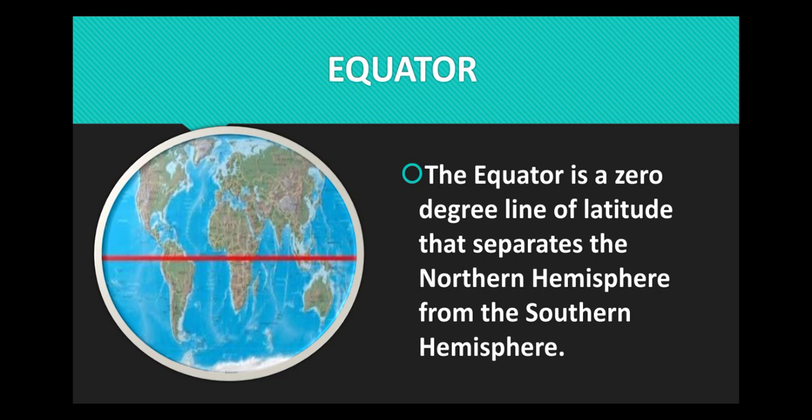Equator. The equator is a zero degree line of latitude that separates the northern hemisphere from the southern hemisphere. The equator is the great circle at the center of the Earth.